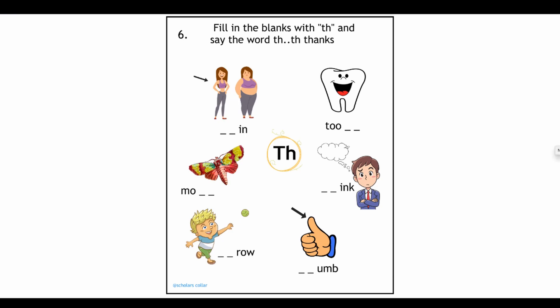We're doing scrambled words. In the scrambled words you're going to go ahead and unscramble the words and write the spelling of each word. You can help your child here if they don't know it, which I'm not expecting they should if they are three or four years old. You're just going to write P-I-G pig, S-E-A-L seal, D-U-C-K duck, D-O-G dog, S-H-A-R-K shark and cat, lion and deer.